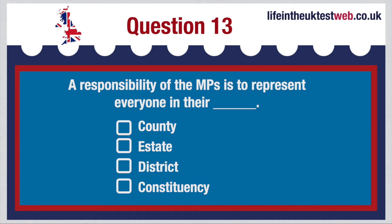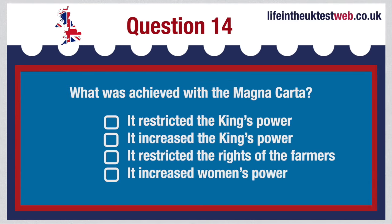It restricted the king's power, it increased the king's power, it restricted the rights of the farmers, or it increased women's power? The correct answer is: The Magna Carta, which means the Great Charter, established the idea that even the king was subject to the law. It protected the rights of the nobility and restricted the king's power to collect taxes or to make and change laws.